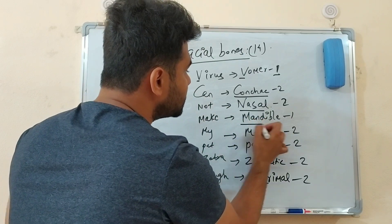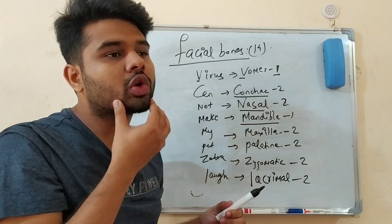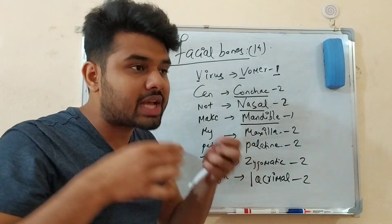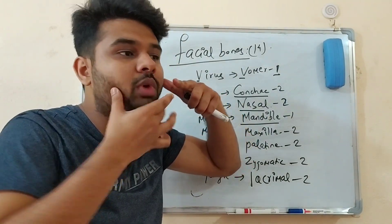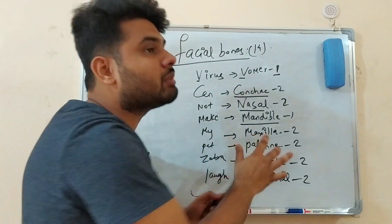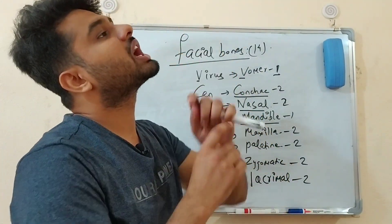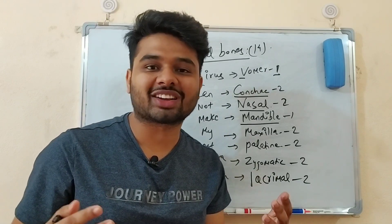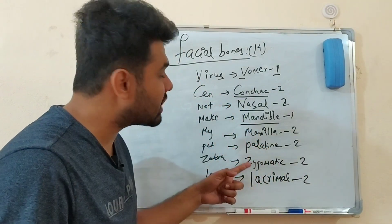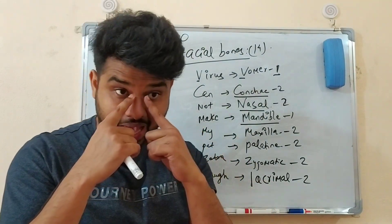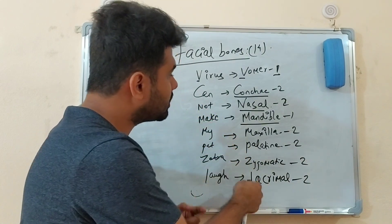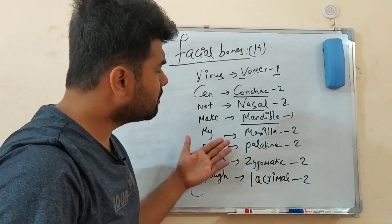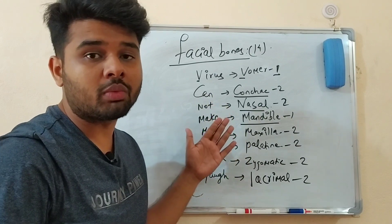There are 2 nasal bones and the lacrimal bone. Then the maxilla bone and the zygomatic bone — these are the facial bones. The mandible bone is also present. The palatine bone is also counted. So in MCQ, we have to identify whether it is a facial bone or cranial bone — and this is a common first question.